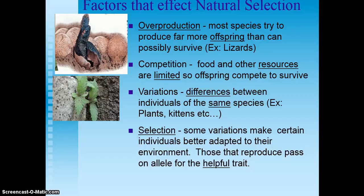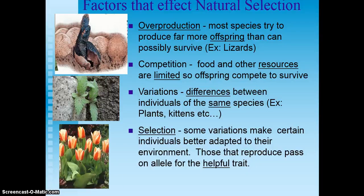The third factor is variation, which refers to differences between individuals of the same species — different plants have different traits, different kittens have different traits. And the fourth is selection: some variations make certain individuals better adapted to their environment. Those that reproduce pass on the allele for that helpful trait to their offspring.